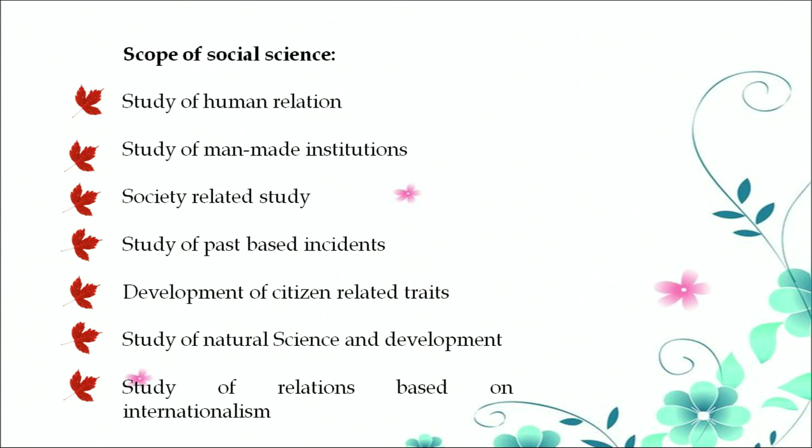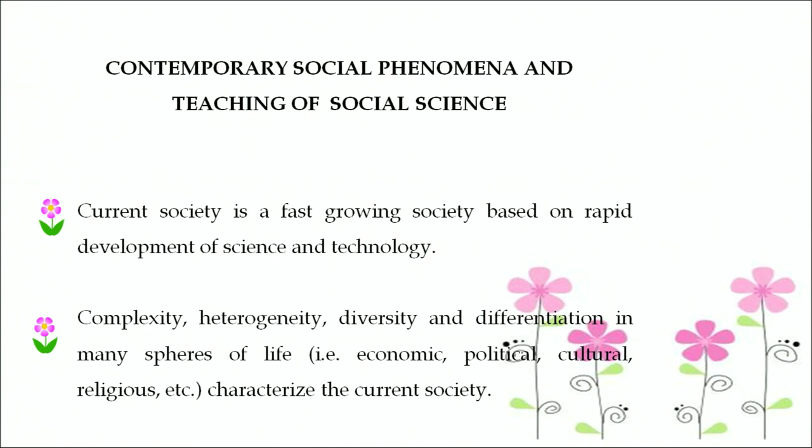The scope of social sciences always emphasizes: study of human relations; study of human-made institutions; society-related studies; study of past-based incidents in history; development of citizen-related traits in political science; study of natural science and development in anthropology; and study of relations and contemporary social phenomena.